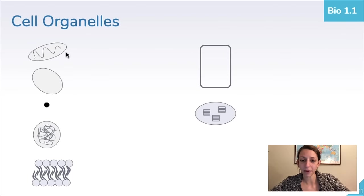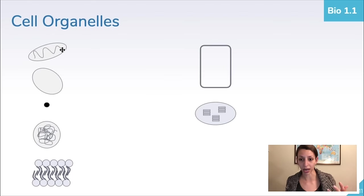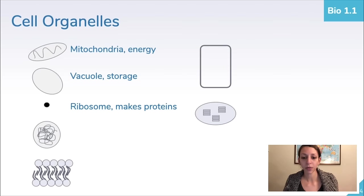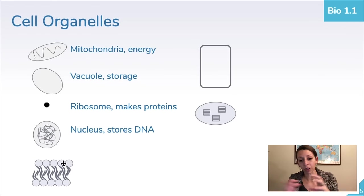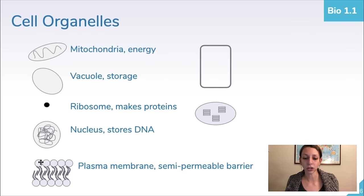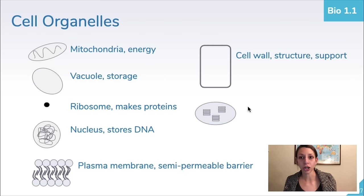Recognizing organelles by picture: the mitochondria is where cellular energy is created in a process called cellular respiration — you need to know more than just that it's the powerhouse of the cell. Vacuoles are for storage. Ribosomes, represented by little dots, are where proteins are made. The nucleus stores DNA and genetic information in eukaryotic organisms. The cell membrane, a phospholipid bilayer, provides a semi-permeable barrier to maintain homeostasis. The cell wall provides structure and support, is geometric in shape, and is not found in animal cells.